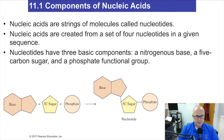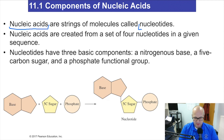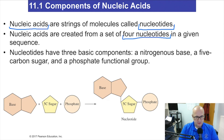First things first, if you want to study genetics or learn about the chemistry of genetics, you have to understand some terms. Nucleic acids are strings or polymers of molecules known as nucleotides. Write that word down — nucleic acids and nucleotides. A nucleic acid is essentially created from a set of at least four of these nucleotides — you can have more, but it has to be at least four — all in a given sequence.